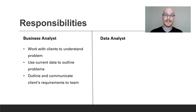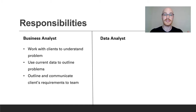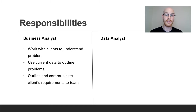First let's look at the business analyst. The business analyst is going to work with the clients a lot to understand what they need and what problems they're having, and then they're going to work with the managers to figure out how that's going to work within their team. The next thing they do is use current data to outline the problem — they go in, look at the data, and then describe to the team what they are trying to solve. They also outline and communicate what the client actually wants to the team.